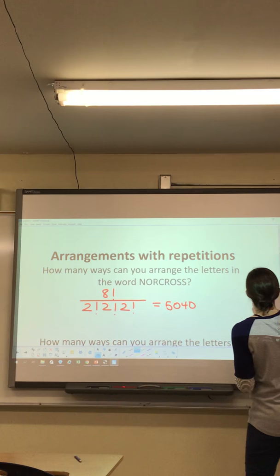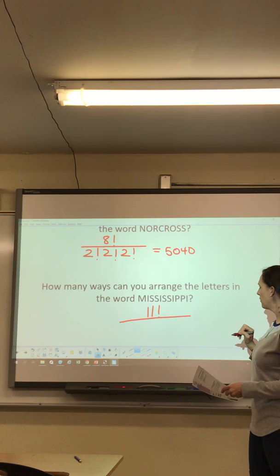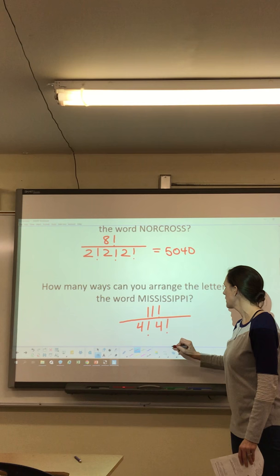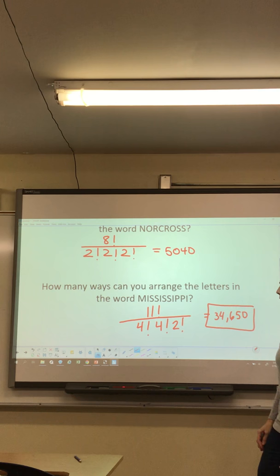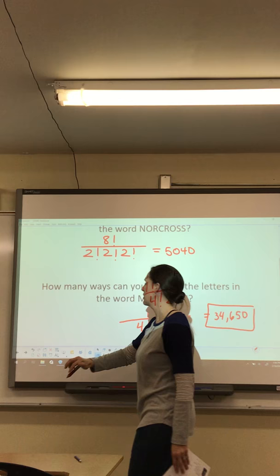Now let's do Mississippi — that has lots of repeats. Mississippi has 11 letters. The I is repeated four times, the S is repeated four times, and the P is repeated two times. So you take out those repeats: 11 factorial divided by 4 factorial times 4 factorial times 2 factorial. Pause the video and plug this into your calculator — you should get 34,650. Make sure you're not just doing 11 factorial, because switching repeated letters around looks the same.